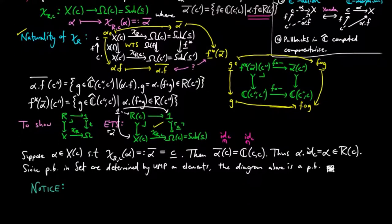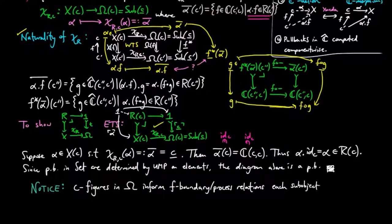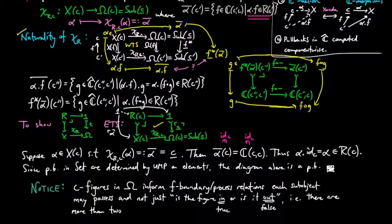Notice that C figures in omega inform F-boundary slash process relations each sub-object may possess, and not just is it in or is it not in. In other words, there are more than two truth values for figures in omega.